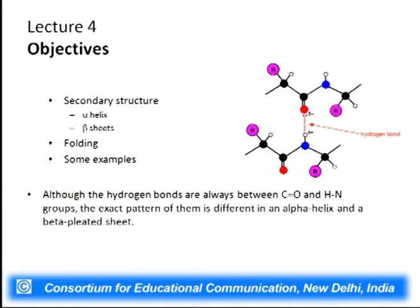Welcome students, this is lecture 4 on secondary structures, protein folding, and the interactions responsible for it. The most important concept in secondary structure is that it is entirely dependent on hydrogen bond formation. In primary structure, the key bond was the covalent peptide bond. Secondary structure depends on hydrogen bonds — and also on disulfide bridges, which are covalent bonds that will also be discussed.